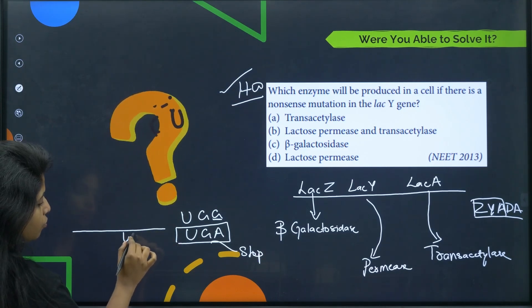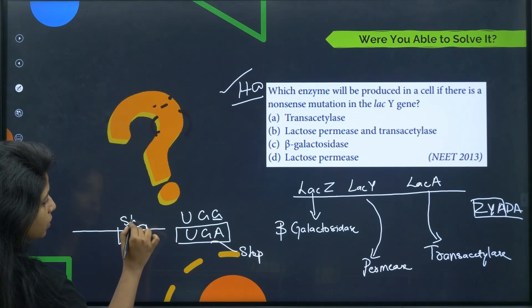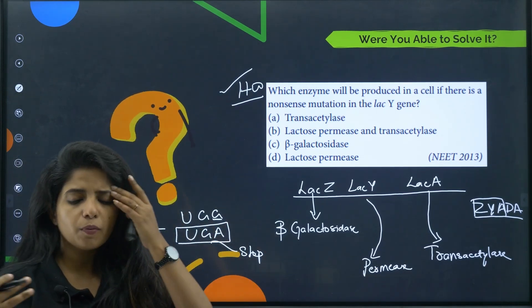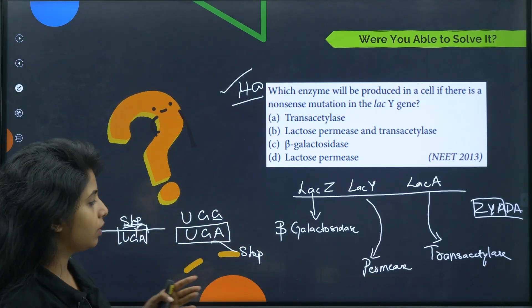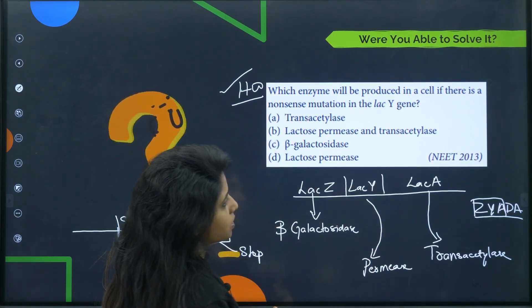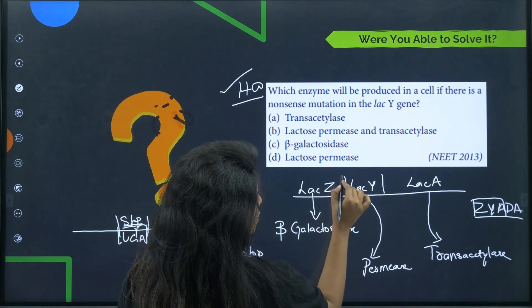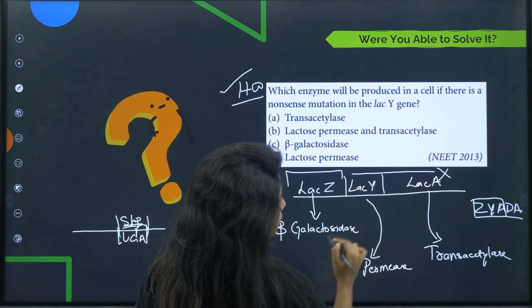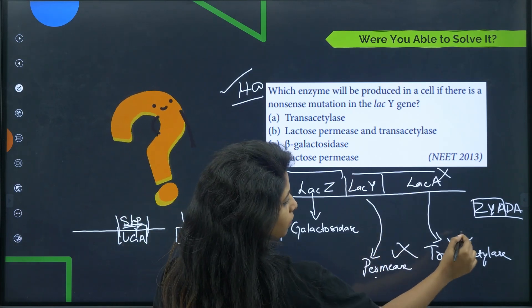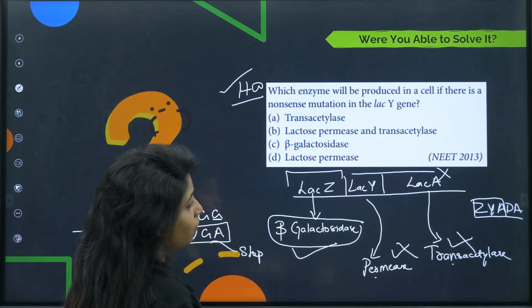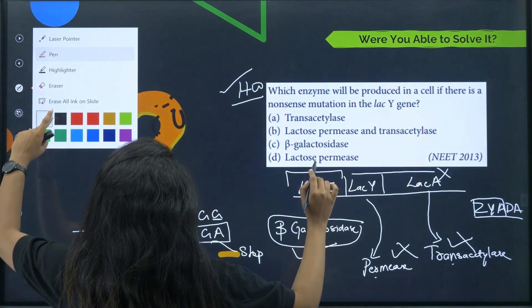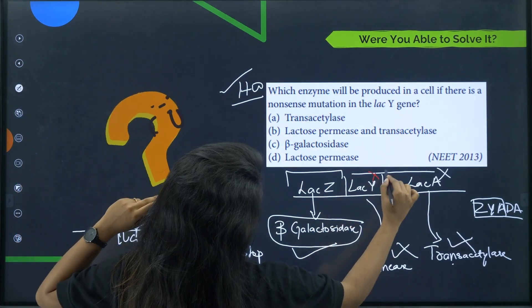Because of the stop codon introduced by the nonsense mutation in lac y, there is earlier termination of translation. This means only the product before the mutation site — beta-galactosidase from lac z — will be produced. Permease and transacetylase, encoded by lac y and lac a respectively, will not be produced since transcription/translation does not proceed past the mutation site.